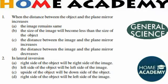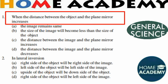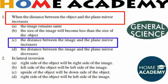Question number 1: When the distance between the object and the plane mirror increases, what happens? The size of the image will become less than the size of the object, or the distance between the image and the plane mirror increases? The correct option is: the distance between the image and the plane mirror increases.